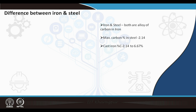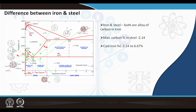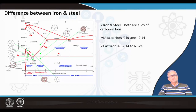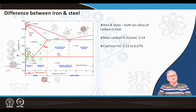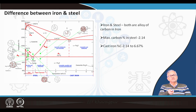We should understand this better in terms of the iron-carbon diagram, a well-known binary phase diagram in metallurgy. On the x-axis, carbon increases from 0 to 6.67%, because beyond 6.67% iron forms iron carbide. Steel is defined as the region from 0 to 2.14% carbon, and beyond that it is called cast iron.